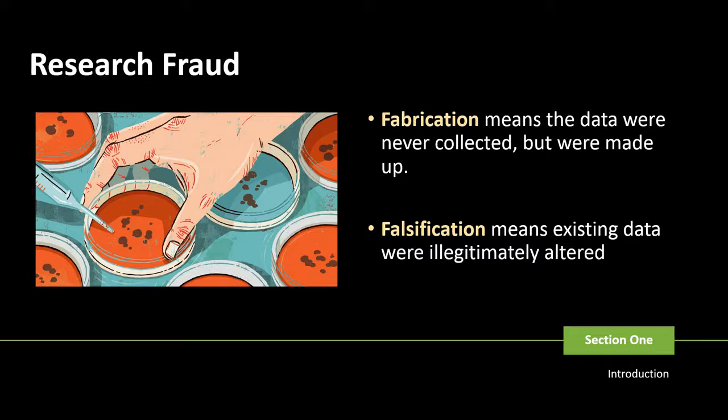Research fraud refers to cases where data were either fabricated or falsified to provide false support for the researcher's hypothesis. Fabrication means the data were never collected but were made up. Falsification means existing data were illegitimately altered, including manipulating research materials, images, data, equipment, or processes. Falsification also includes changing or omitting data or results in such a way that the research is not accurately represented. For example, a person might falsify data to make it fit with the desired end result of a study.